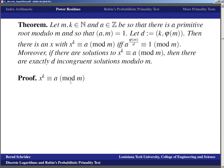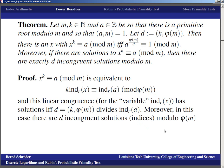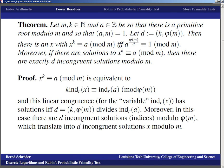Proof: X^k ≡ a (mod m) is equivalent to k·ind_r(x) ≡ ind_r(a) (mod φ(m)). Treating ind_r(x) as the variable, this linear congruence has a solution if and only if gcd(k, φ(m)) divides ind_r(a). There are d = gcd(k, φ(m)) incongruent solutions modulo φ(m), which translate into d incongruent solutions x modulo m. Then d divides ind_r(a) if and only if (φ(m)/d)·ind_r(a) ≡ 0 (mod φ(m)), which is equivalent to a^(φ(m)/d) ≡ 1 (mod m).